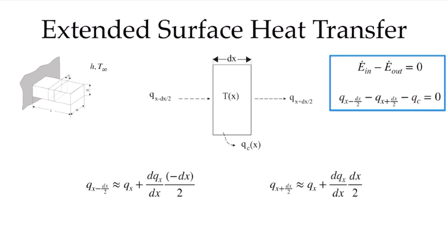Let's look at those terms in a little more detail. I can expand from the known value at the center to the faces on either side of this volume using Taylor series approximations. The heat rate at the face x minus dx over 2 is Q_x plus the derivative of Q_x times the distance minus dx over 2. And at Q_x plus dx over 2, it's approximately equal to Q_x plus the derivative times the distance dx over 2. As always, Q_x, the heat rate, is given by Fourier's law: conductivity times the cross-sectional area times the derivative with respect to x of temperature.